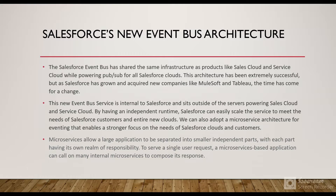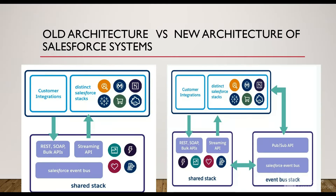So what is a microservice architecture? Microservice architecture basically allows a large application to be separated into smaller independent parts, with each part having its own realm of responsibility. To serve a single user request, a microservice-based application can call other internal microservices applications to compose its response.